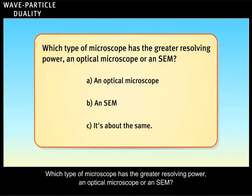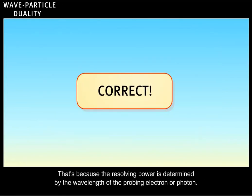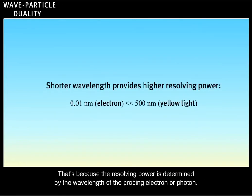Which type of microscope has the greater resolving power? An optical microscope or an SEM? Correct. That's because the resolving power is determined by the wavelength of the probing electron or photon.